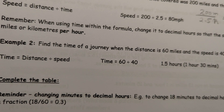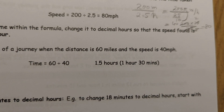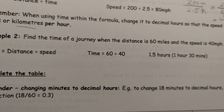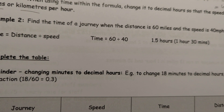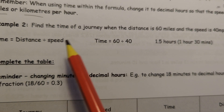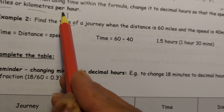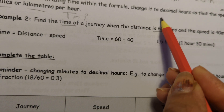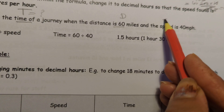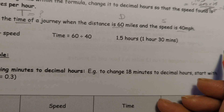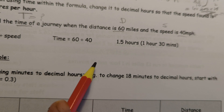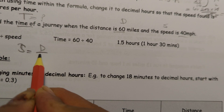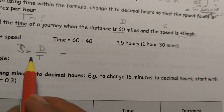In Example 2, note that when using time in the formula, convert it to decimal hours, and check that units match — miles or kilometers per hour or per second. Here we have to find the time, so time gets a question mark. Distance is 60 miles and speed is 40 miles per hour. Our main formula is speed equals distance over time.